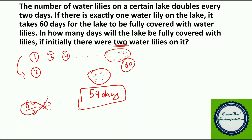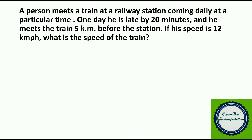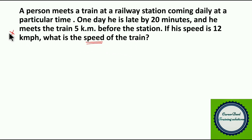Moving to question number 21. A person meets a train at a railway station coming daily at a particular time. One day he is late by 20 minutes and meets the train 5 km before the station. If his speed is 12 km per hour, what is the speed of the train? This is a previous year L&T Infotech question. Let the man's speed be 12 km per hour.